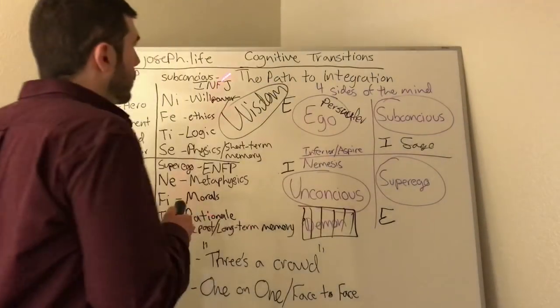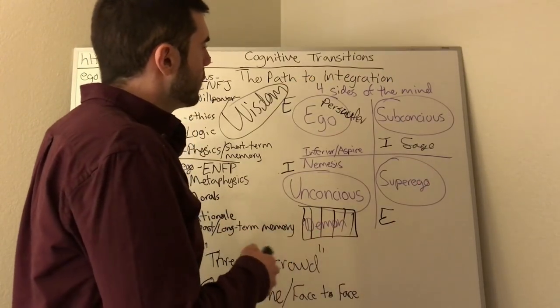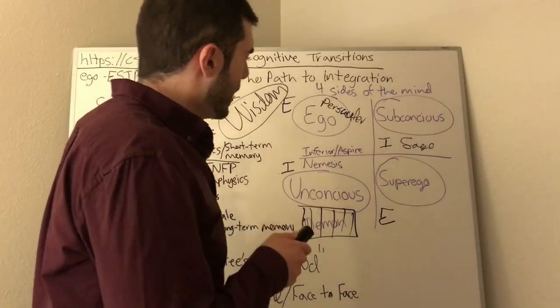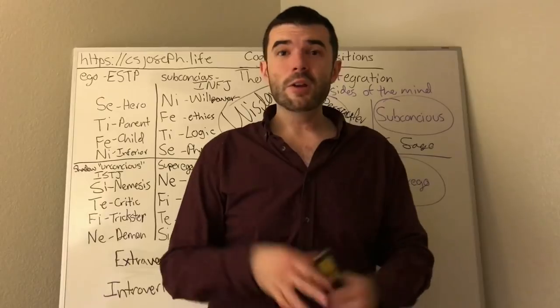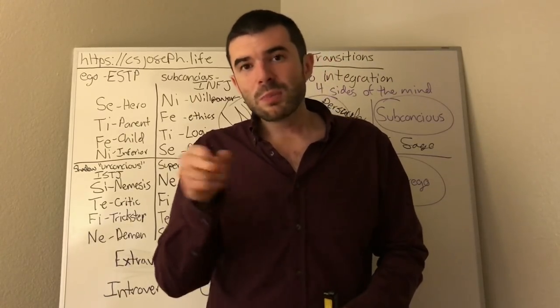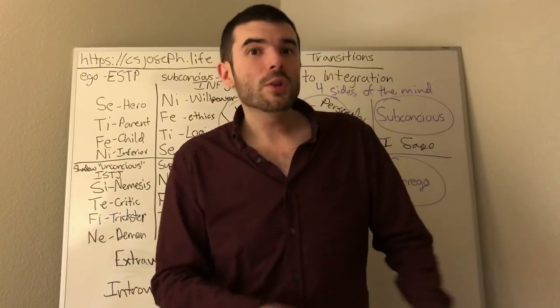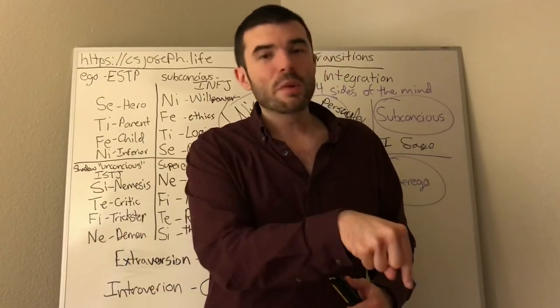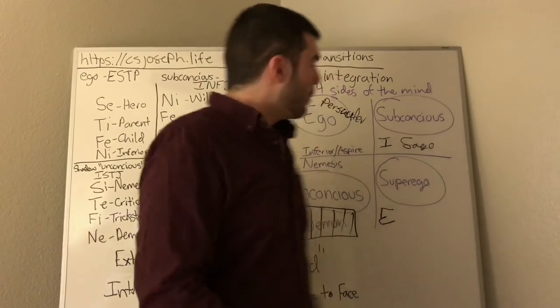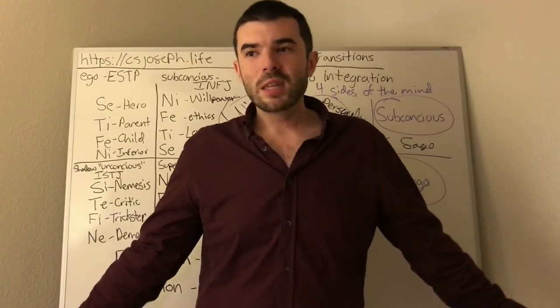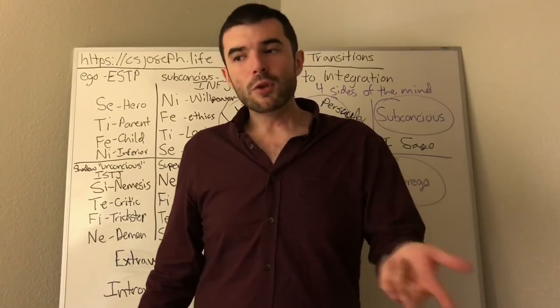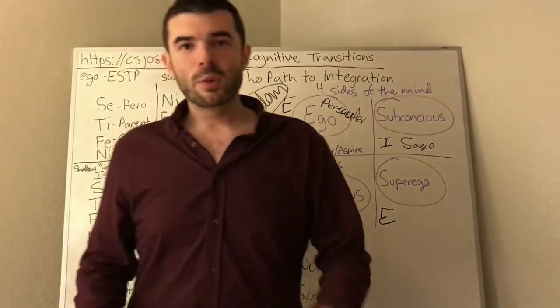That is how the transitions work, cognitive transitions. That's how the path of integration works. The idea is to get all four sides of your mind working in harmony together. To do that, get over your fear, get over your worry, and recognize when it's time to hit rock bottom, that you have nothing to lose and everything to gain. That is what it is.